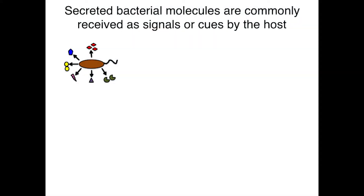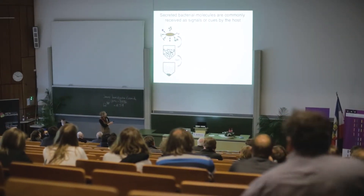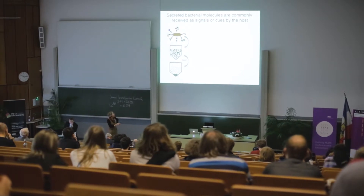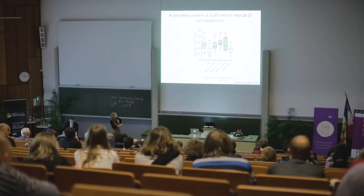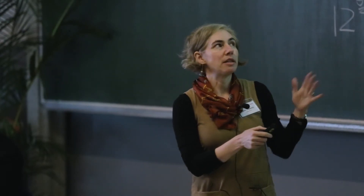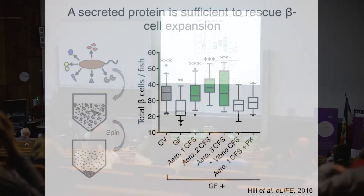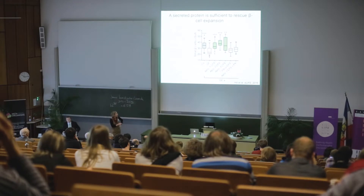She went on to ask whether there are bacterial products that can reverse this trait. She performed a simple fractionation, collecting the cell-free supernatant — the secreted material isolated from cells that are spun down and filtered out. She found that these Aeromonas strains all produced some kind of secreted factor in their cell-free supernatant sufficient to restore beta cell numbers, whereas a Vibrio strain that didn't stimulate beta cell proliferation in mono-association also didn't produce a secreted factor. Furthermore, she showed that treating one of these cell-free supernatants with proteinase K destroyed the activity, suggesting that the factor was likely a protein.